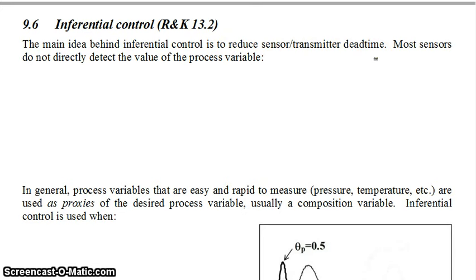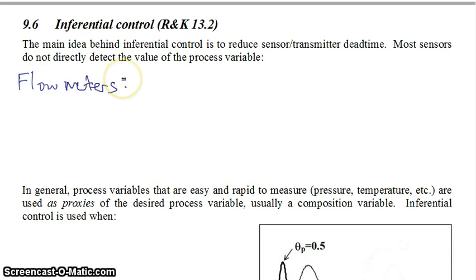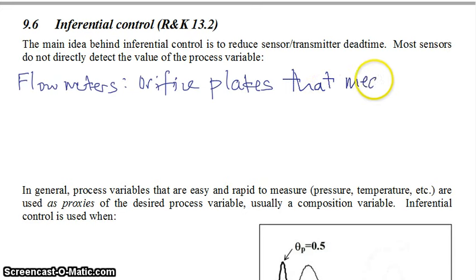Inferential control really happens all the time, and the reason why is because most sensors don't actually directly detect the value of your process variable. For example, flow meters are often orifice plates, and they don't actually measure the flow — orifice plates measure a change in pressure.